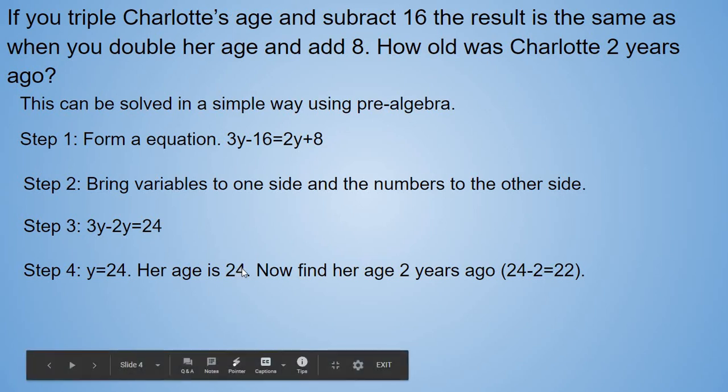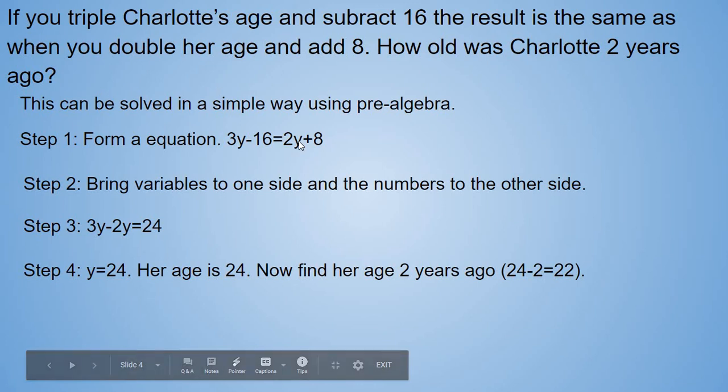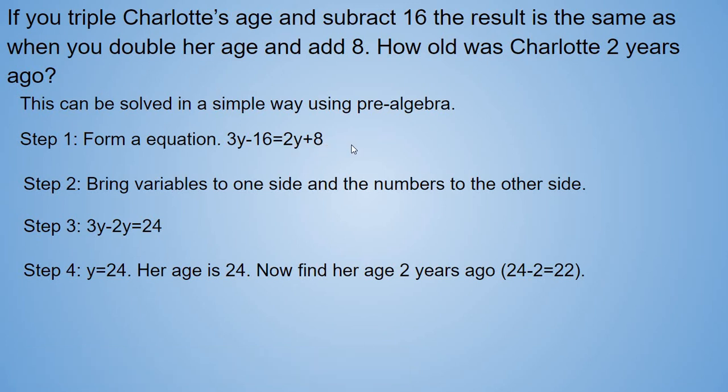And now if we take this 24, put it into this, so 3y minus 16 is 56. And now we have to substitute it into 2y plus 8 to see if that's also 56. If that's also 56, we're correct so far. Hopefully it's 56. Let's see. 2 times 24, that's 48, plus 8, that's 56. 56 equals 56. Yes, we're correct so far.